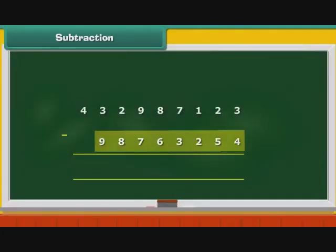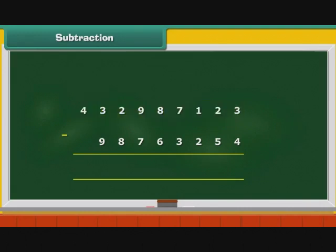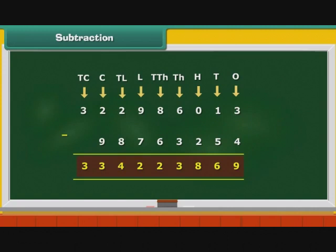Let us now perform subtraction on large numbers. Subtract 98763254 from 432987123. Draw the Indian place value chart. 98763254 is the subtrahend as it is the smaller number. Write the minuend, then write the subtrahend below it. Subtract the numbers starting with the digits at the ones place, then proceed to tens place, hundreds place and so on. The difference is 334223869.